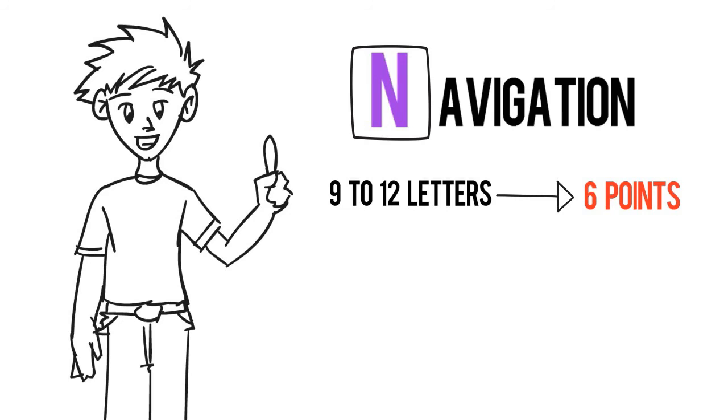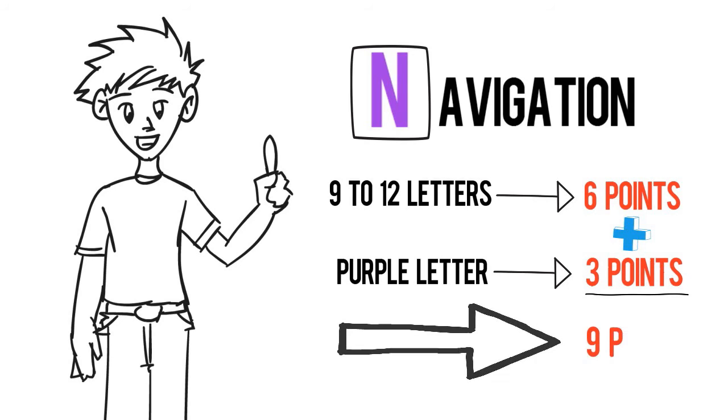Because navigation begins with an N, a purple letter, award 3 points. The total points awarded to John for correctly spelling navigation is 6 plus 3, which equals 9 points.